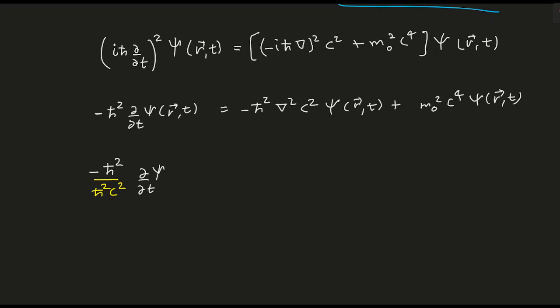We have minus ℏ²C²/ℏ²C² del² ψ of r,t, plus M₀² C⁴ divided by ℏ² C² times ψ. So these ℏ² get cancelled out and you will be left with: